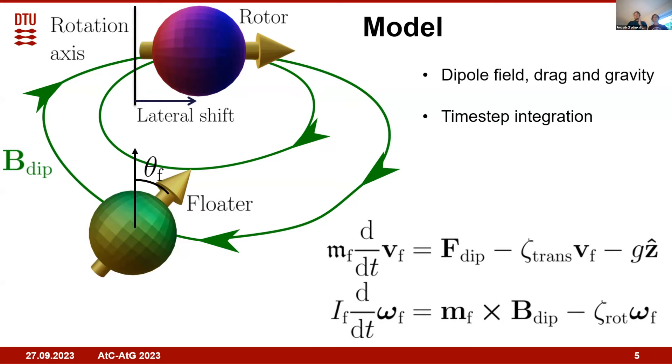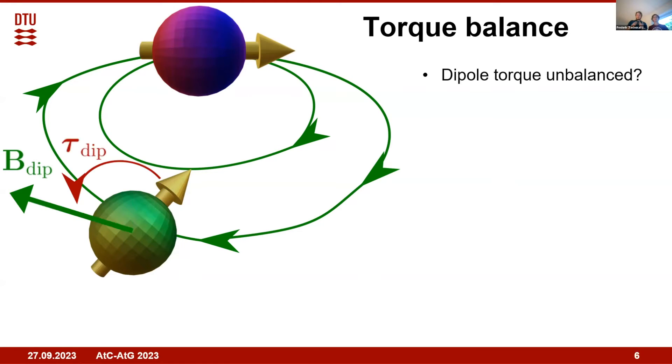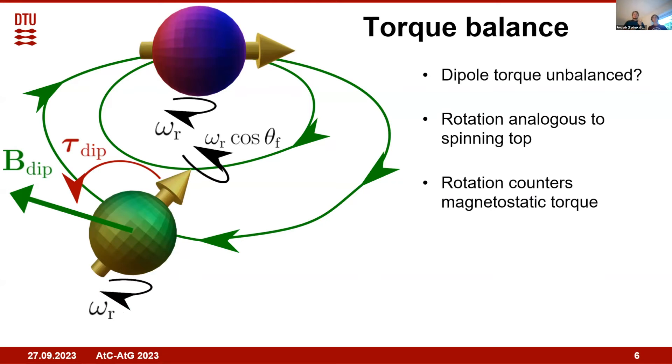I will go through the torque and force balance in steady state. It seems at first that this dipole torque is unbalanced so the moment should flip over, but it is in fact counteracted by the rotation itself. In our simulations we get this state of rotation where the floater moment precesses at the same frequency that the rotor is rotating, omega_r, but it has a second rotational mode around the moment itself. This is analogous to a spinning top where you also have spinning around one axis and precession of that rotation axis around vertical.